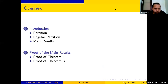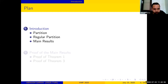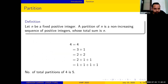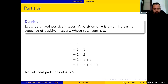This will be the overview: first I'll state a few definitions and the main results, and then I'll move on to the proofs. Let's define a partition — as I guess it's familiar to many of you — let n be a fixed positive integer; a partition of n is a non-increasing sequence of positive integers whose total sum is n. For example, if we pick four, we can write four as sums of positive integers in the following manner.